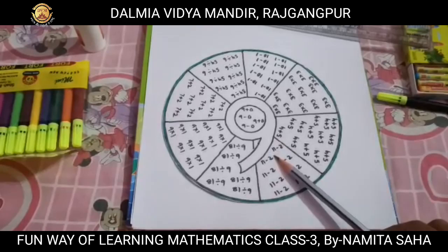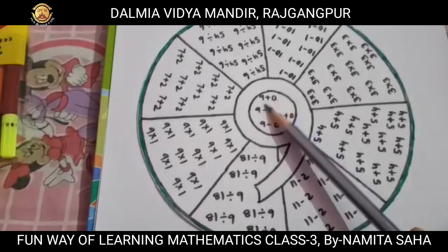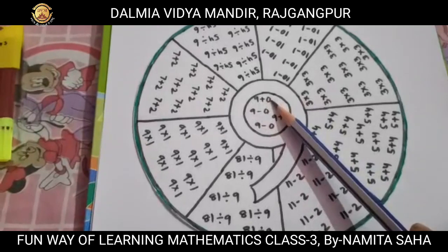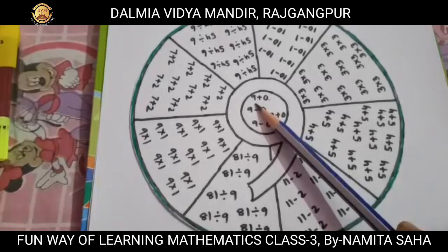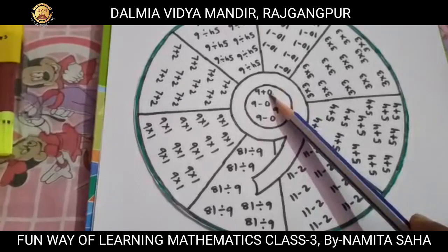Let me explain what these properties are. Children, at the center of this circle you can see that I have written 9 plus 0, because 9 plus 0 gives you the value 9. So according to the rule, whenever we add any number with 0 it gives us the same number. So 0 is called the additive identity, and it is one of the properties of addition.